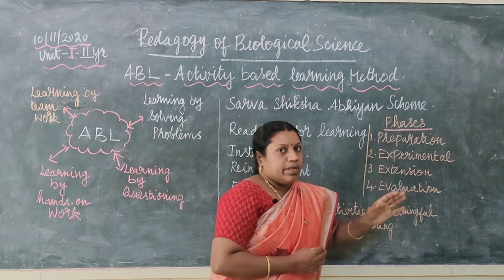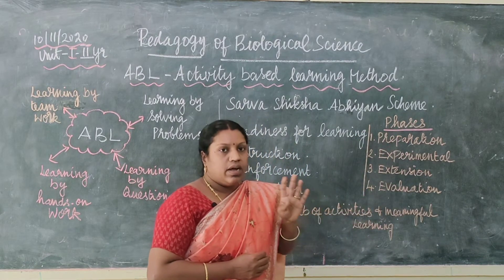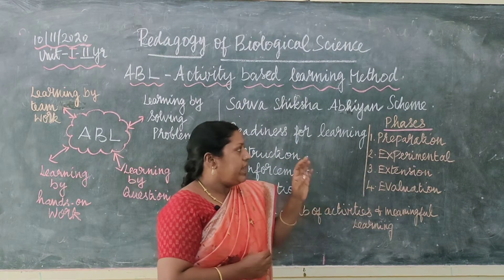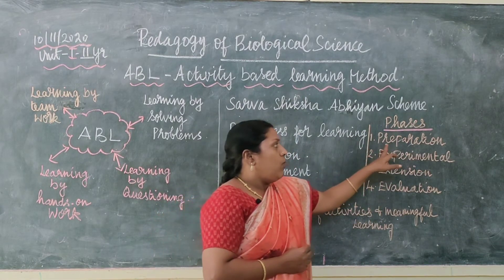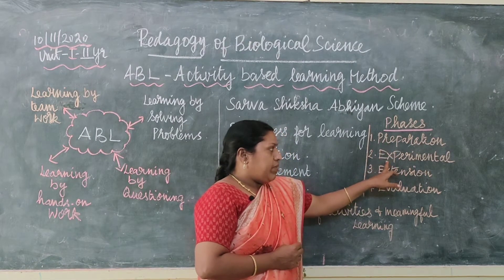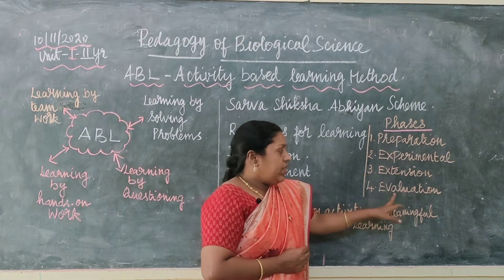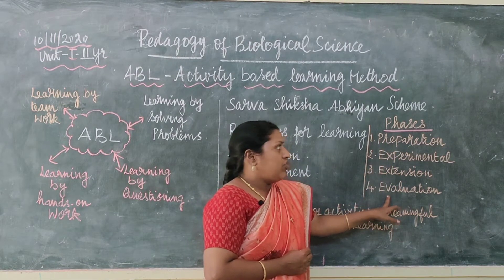In the ABL method, there are four phases and four steps. The first is preparation, the second is experimental, the third is extension, and the fourth is evaluation.